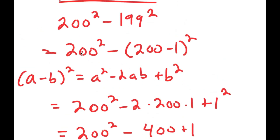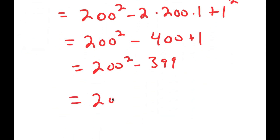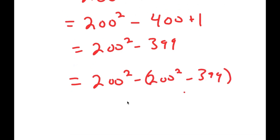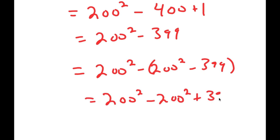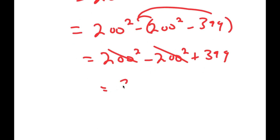That simplifies to 200 squared minus 399. Remember, we have 200 squared minus all of this, so we get 200 squared minus (200 squared minus 399). Distributing the negative, the 200 squared terms cancel out, and we're left with 399.